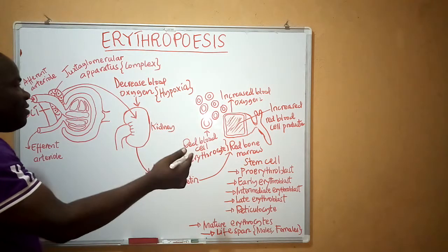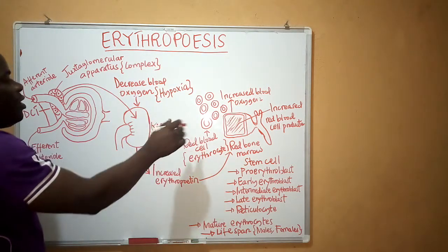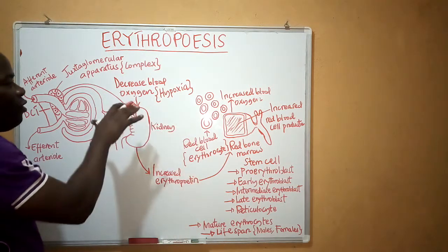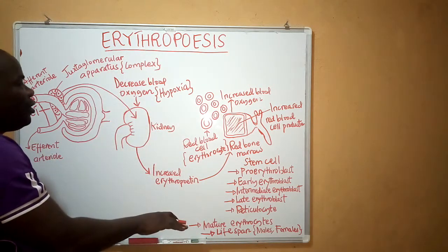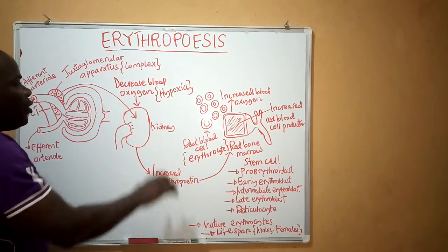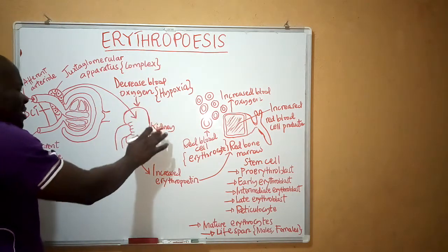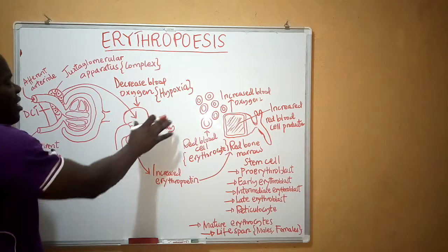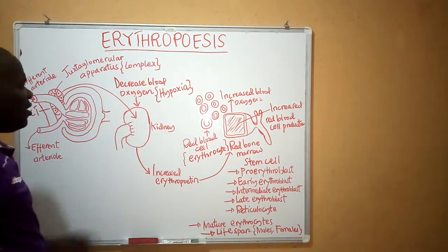These cells trigger the whole process that is going to maximize the production of red blood cells, because red blood cells are very crucial in transporting oxygen from the lungs to the body tissues. This is why the kidney is among the organs within our body that require a high amount of oxygen.